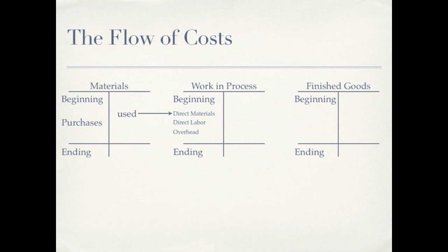Once we've put this product together and it's completed, that's called cost of goods manufactured, and it moves from work in process into our finished goods inventory account. It stays there until the product is sold. Once the product is sold, all of those costs — the materials, the labor, and the overhead — are expensed at that time as cost of goods sold.